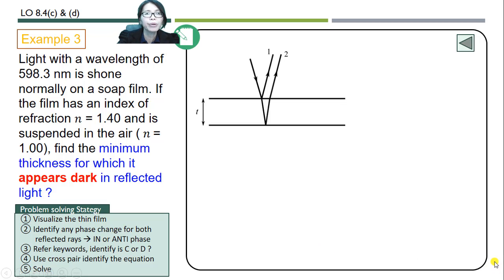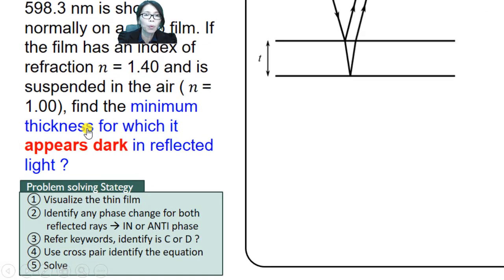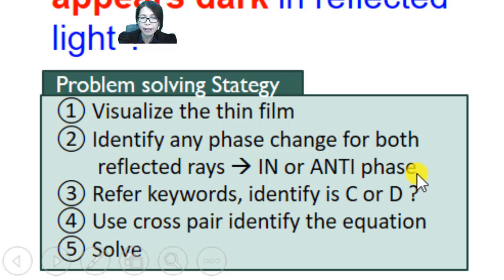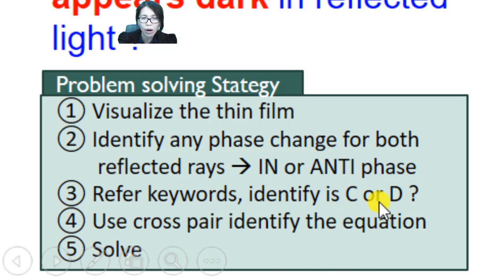Now I will show you a complete example of how to solve a problem related to interference in thin films. Always follow this problem-solving strategy: first, visualize the thin film; second, identify any phase change for both reflected rays and categorize them as in-phase or anti-phase coherent sources; third, refer to the keywords in the question to identify constructive or destructive interference; then use the cross-pair method to identify the equation; lastly, solve the question.